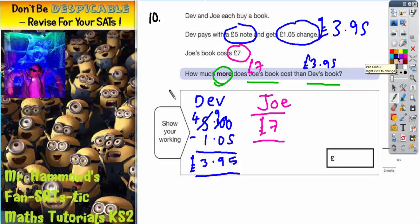If we do the column method, we'd have to do it like this: seven take away £3.95. Now again, there's lots of zeros involved, so this could be tricky. It might actually be easier at this point to just count up from £3.95 to £7. That may be easier.